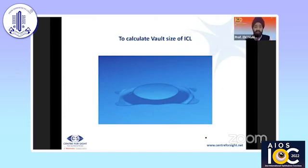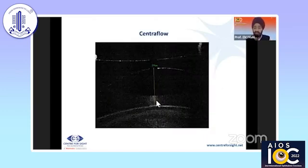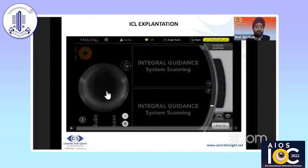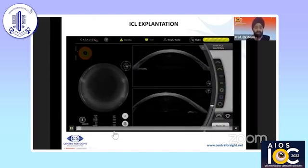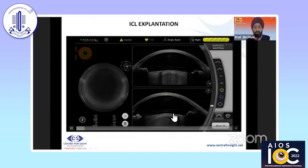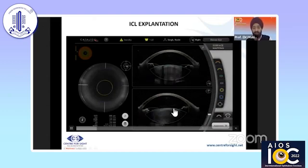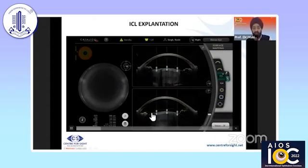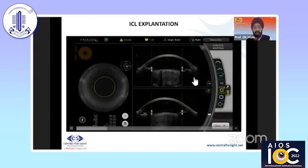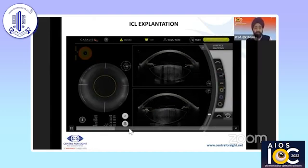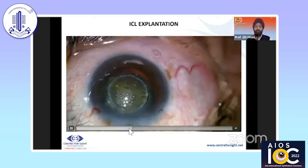This shows vault size calculation — you can see the vault size in an ICL on the OCT. For an ICL explantation in cataract surgery, you can get a good image. You can see the lens and then the cataract; you can align it very well, go ahead and do the laser procedure, and we got a good outcome in this case.